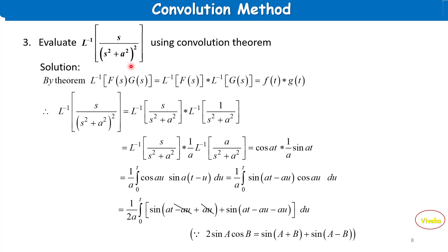Problem 3: Evaluate L⁻¹{ s/(s²+a²)² } using the convolution theorem. The theorem states L⁻¹{F(s)·G(s)} = f(t)*g(t). Since the numerator has one s, we split: L⁻¹{ s/(s²+a²) } * L⁻¹{ 1/(s²+a²) }. Adjusting the second term: (1/a)·L⁻¹{ a/(s²+a²) }.